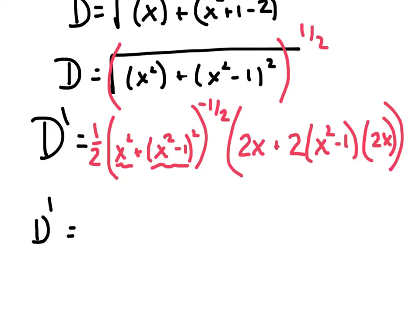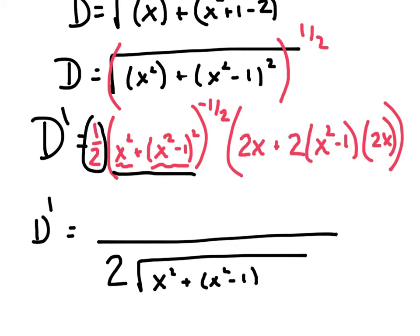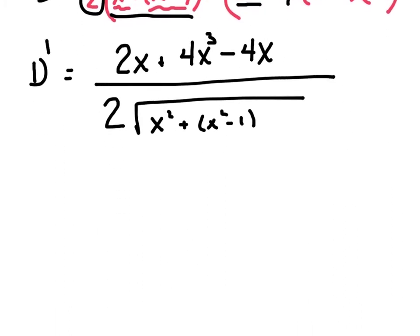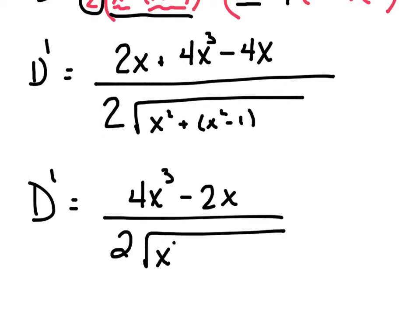As I clean it up, I'm going to go through and ask myself who stays on top and who stays on the bottom. The one half — I'm going to move that 2 to the bottom. All of this junk has a negative exponent, so that's going to the bottom. Then cleaning up the numerator: 2x, and 2 times 2x makes 4x. So I've got 2x plus 4x times x squared is 4x cubed minus 4x, which gives me 4x cubed minus 2x, all over my 2 square root of x squared plus x squared minus 1 squared.